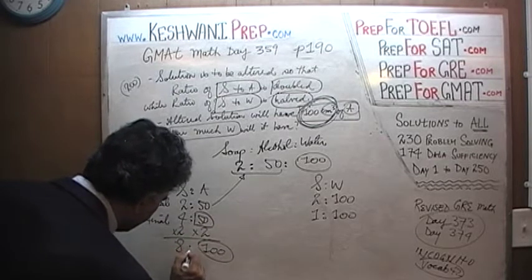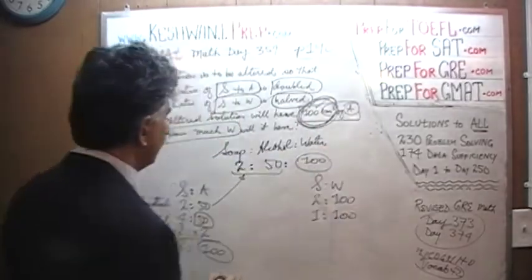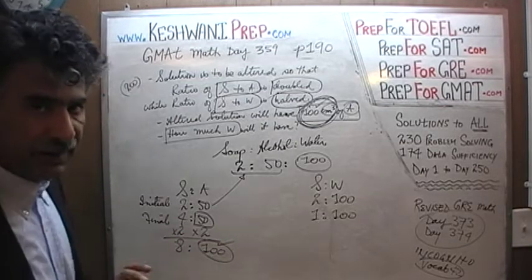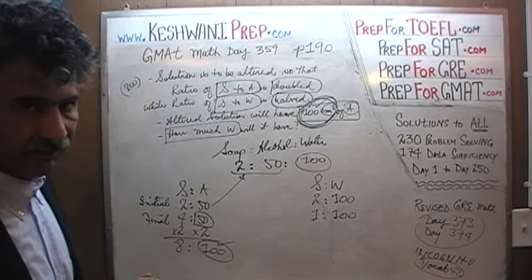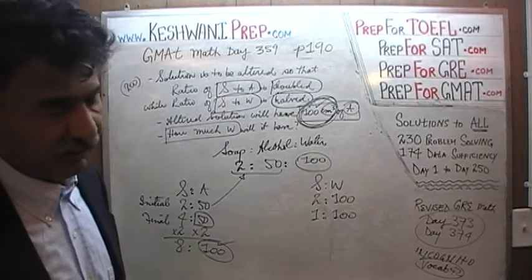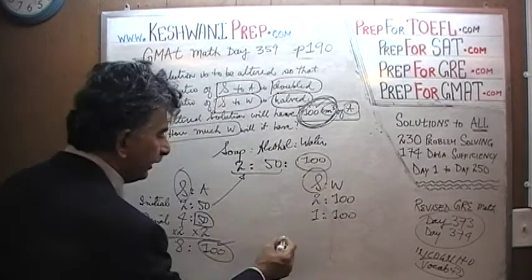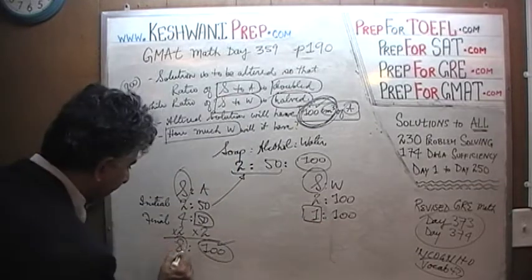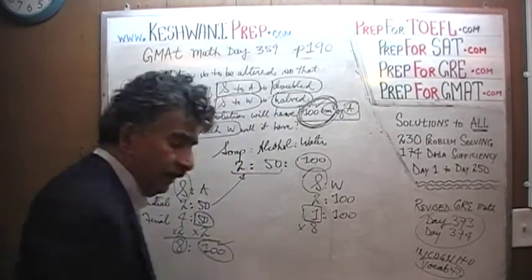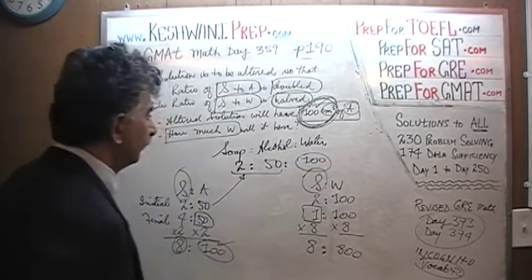We have met that condition — we have 100 cubic centimeters of alcohol. The only last thing left to do is that the common element appearing in both ratios, which is soap, has to be the same amount. Here we have 1 part of soap, and there we have 8 parts of soap. So we make that 1 into 8, and as soon as we do that, we have to multiply the water side by 8, giving us 8 to 800.